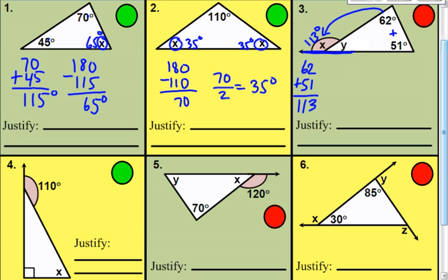Now for y, here's your straight line. If you're adding 113 plus y, that must be 180 degrees altogether. So I'm going to subtract 113 from 180 and get 67 degrees — that would be your measure of y.